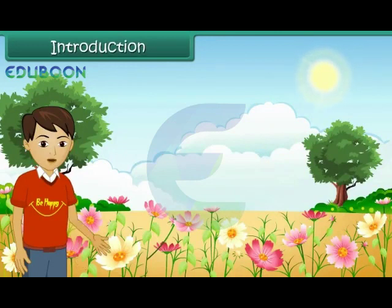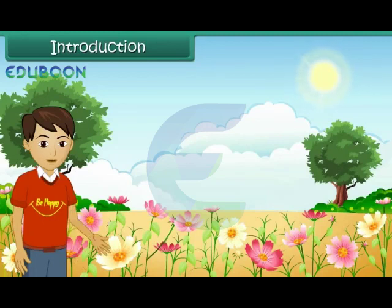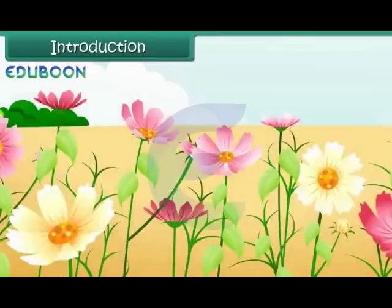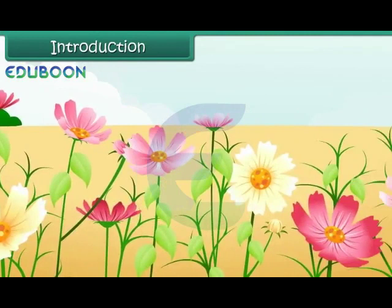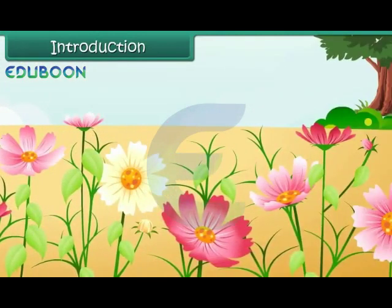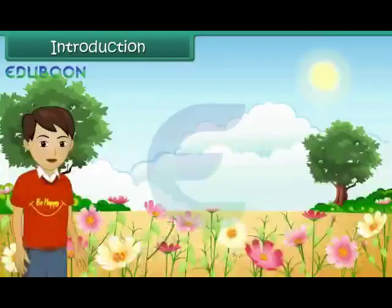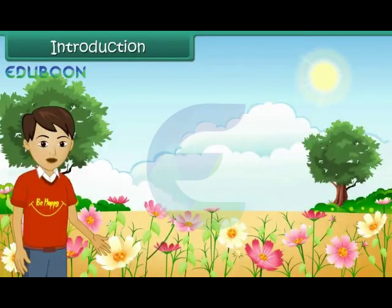The part of a plant that attracts us to it is flowers. Flowers in full bloom make us cheerful. They make our lives colorful. Just as there is a variety of flowers, there is a wide array of leaves. It is a sheer delight to watch leaves and flowers of different shapes and sizes. In this lesson, we will learn about leaves and flowers in great detail.